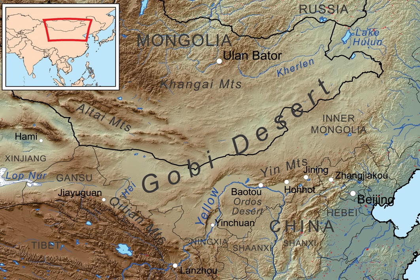The Gobi, broadly defined, can be divided into five distinct dry ecoregions, based on variations in climate and topography.